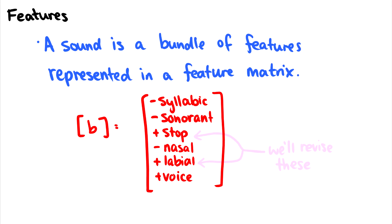For instance, the /b/ — we don't think of it necessarily in phonology as a voiced bilabial stop. That doesn't give us enough information about the properties of the sounds and how those properties can interact with other sounds around it. Instead, we want to think of things like: this /b/ is not syllabic, it is not sonorous, it is a stop, it is not a nasal, it is labial, it does have voice. So we can represent all those things in what we call a feature matrix. I mentioned here that we're going to revise plus stop and plus labial because we don't necessarily use those, but for the sake of demonstration it's a good way to get the idea of what we're going for.